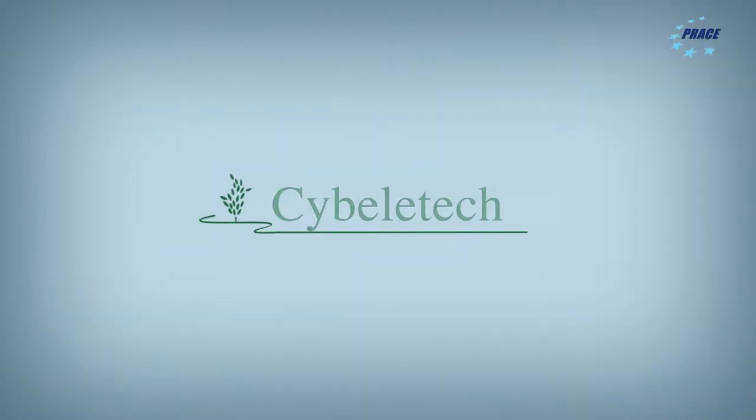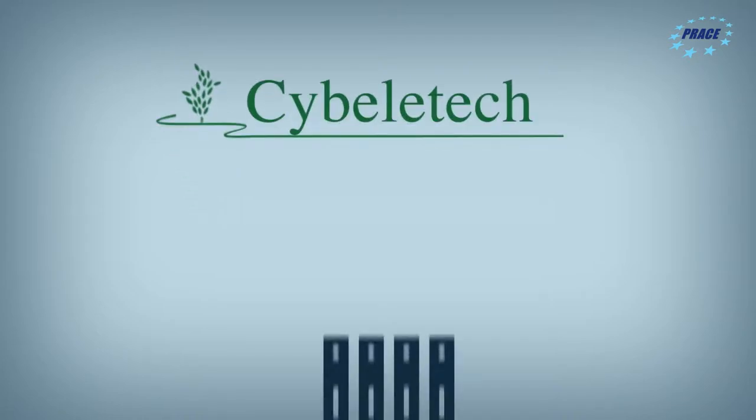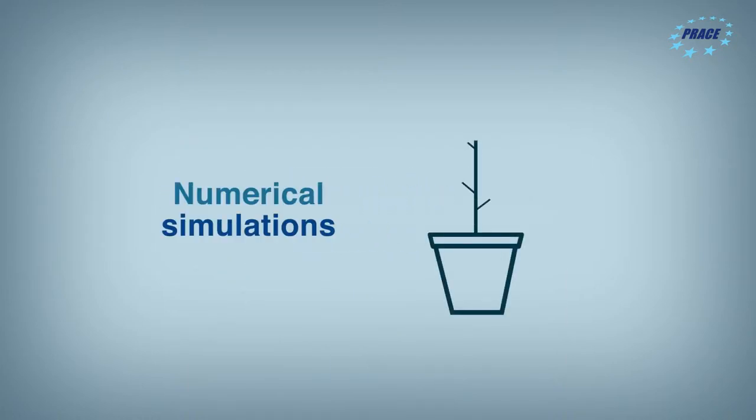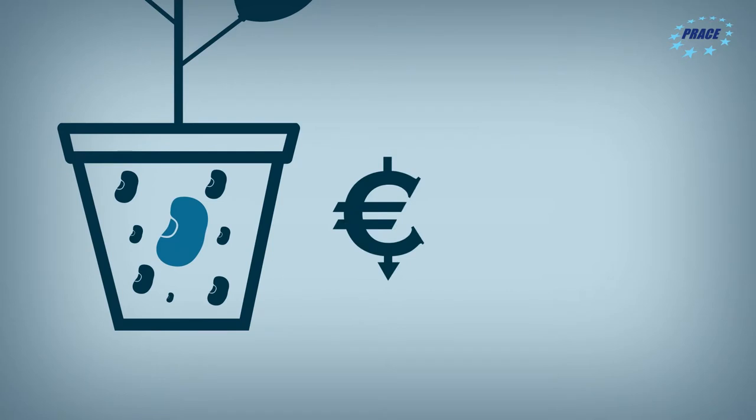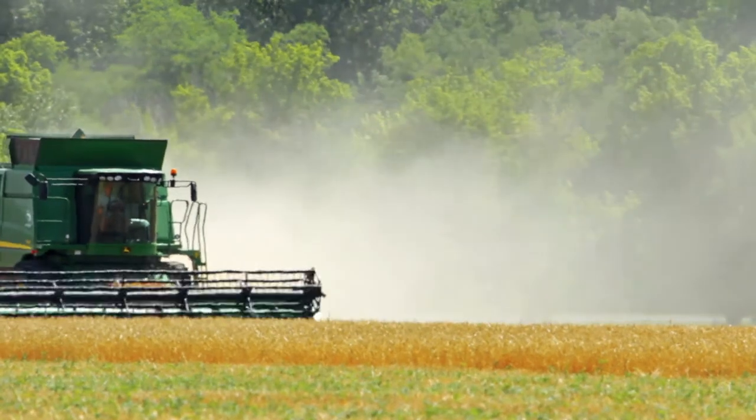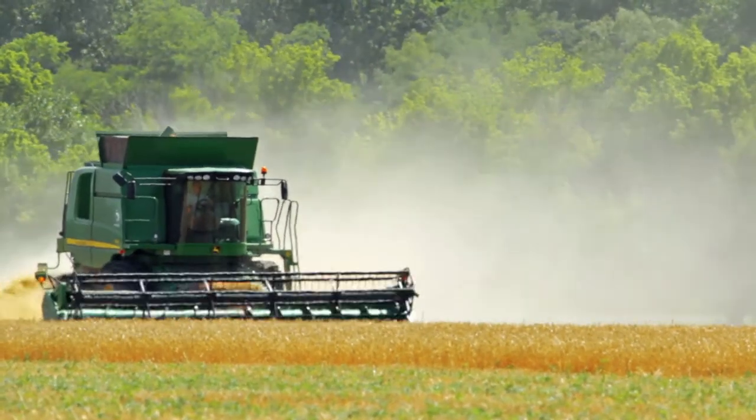It has supported companies like CybelleTech, which applies digital technologies to plants to benefit from supercomputer resources. CybelleTech's goal is to substitute field trials with numerical simulations of plant growth in order to help companies achieve superior varieties of seeds in a way that significantly reduces costs to the environment and saves both time and money. Without supercomputers, the whole process can take up to 10 years.